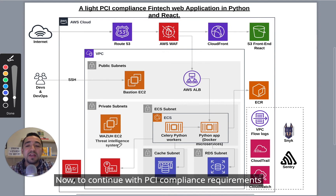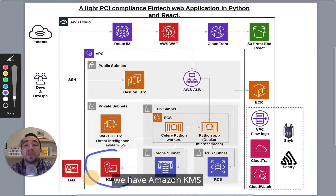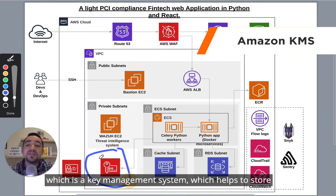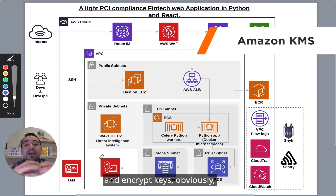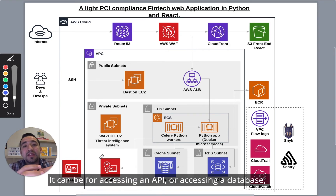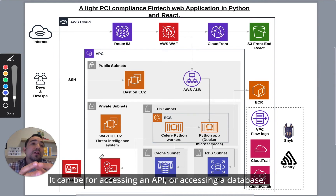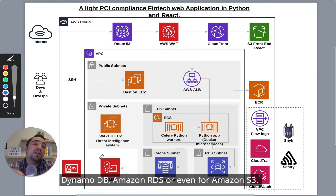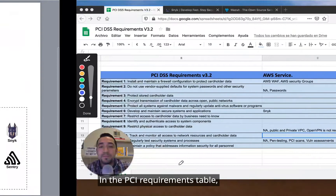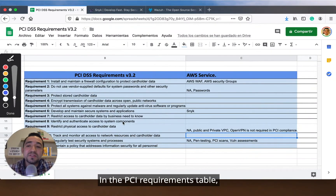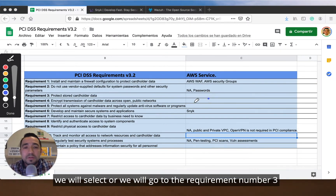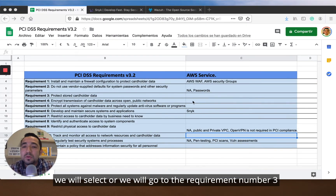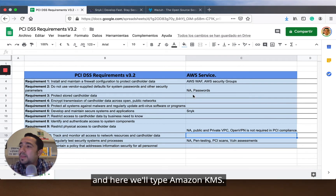To continue with the PCI compliance requirements, we have Amazon KMS, which is a key management system that helps store and encrypt keys — for accessing an API, accessing a database like DynamoDB, Amazon RDS, or even Amazon S3. In the PCI requirements table, we will go to requirement number three and type in Amazon KMS.